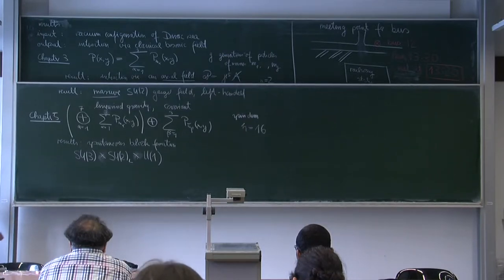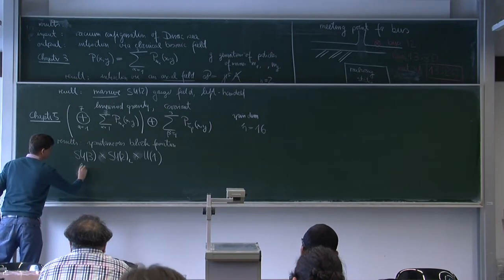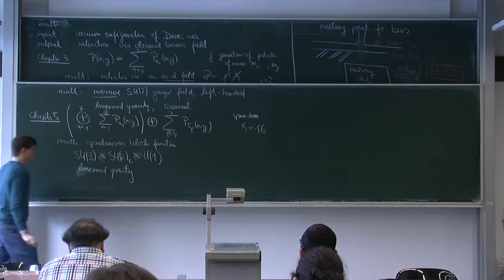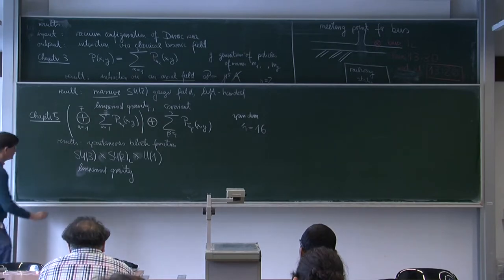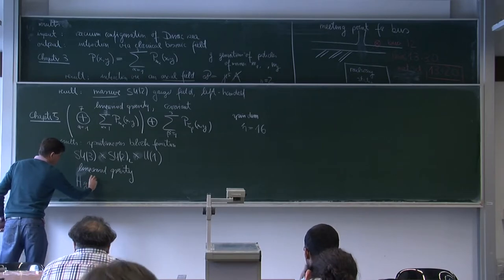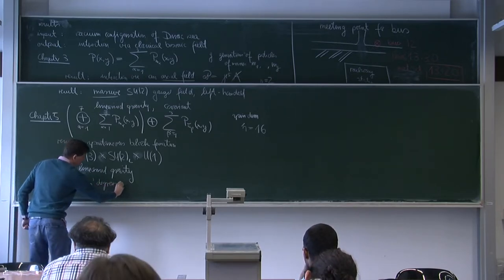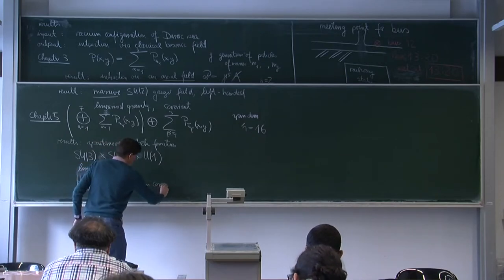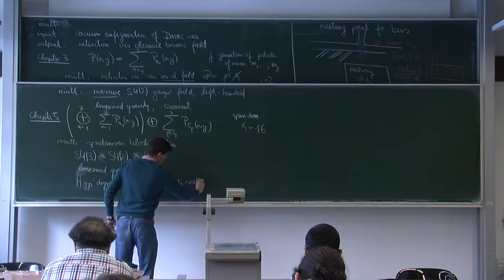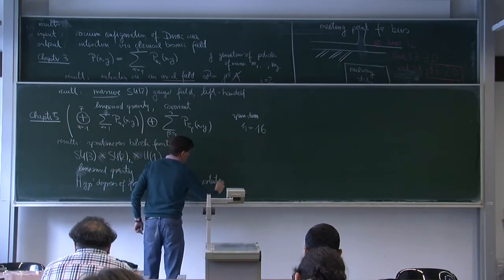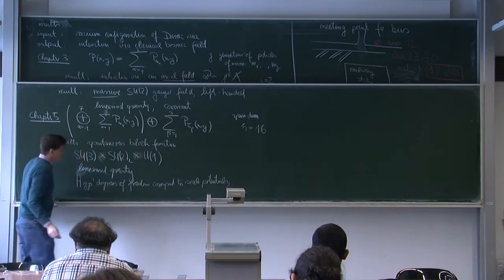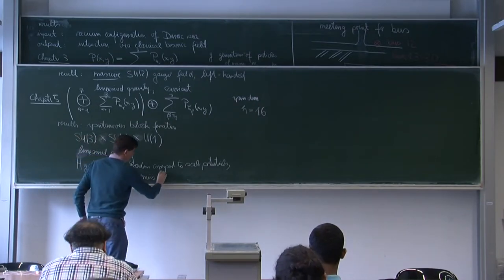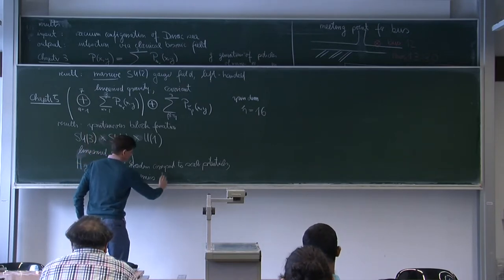One also gets linearized gravity as before. Regarding the Higgs: these Higgs degrees of freedom are present, corresponding to scalar potentials in the Dirac equation, but their dynamics hasn't been worked out yet. The computations are quite heavy and, although a computer program does most of the work, this project hasn't been started.